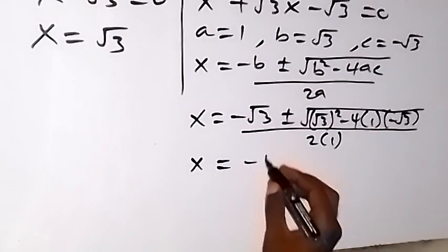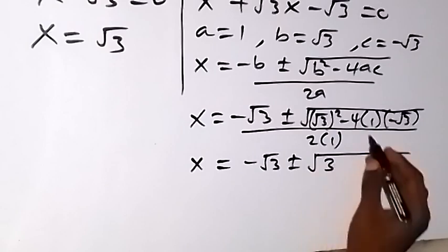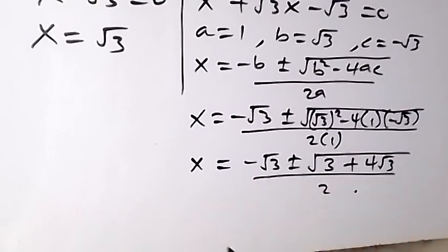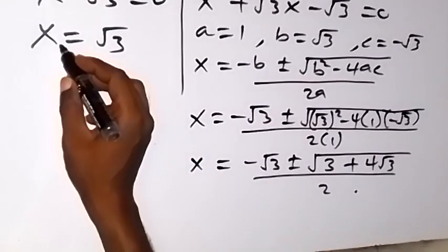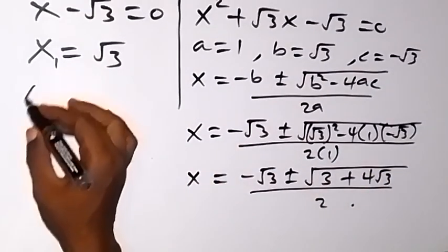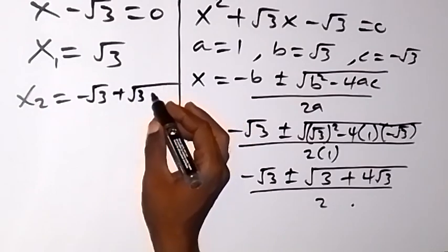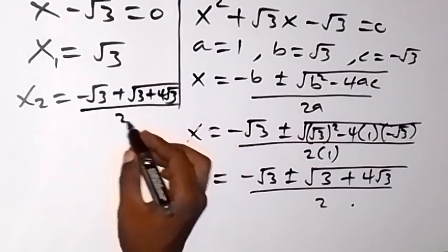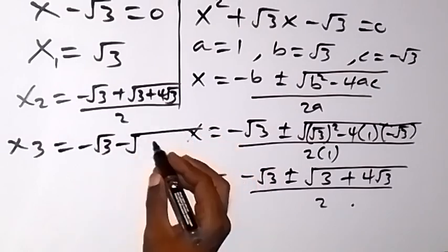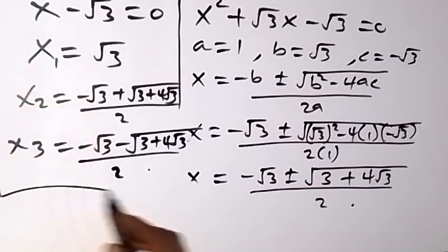So from here, we can write two solutions out. Let this one be the first value of x: x₁ equals to root 3. Then x₂ equals to minus root 3 plus root 3 plus 4 root 3, then over 2. And then x₃ equals to minus root 3 minus 3 plus 4 root 3, then over 2. So these are the values of x from this problem.